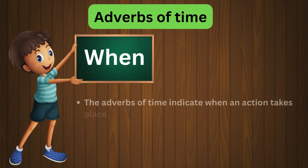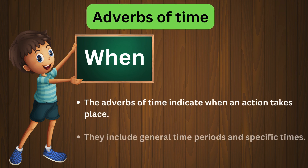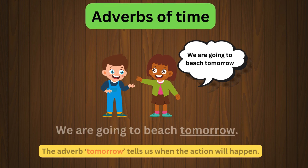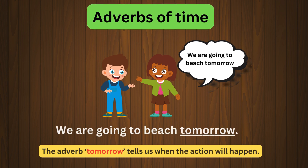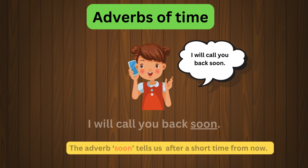Adverbs of time indicate when an action takes place. They include general time periods and specific times. For example: We are going to the beach tomorrow. The adverb 'tomorrow' tells us when the action will happen. Next example: I will call you back soon. The adverb 'soon' tells us that after a short time from now the action will happen.